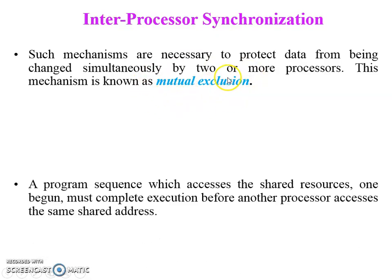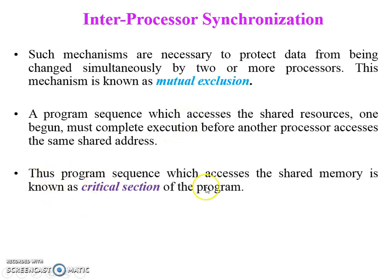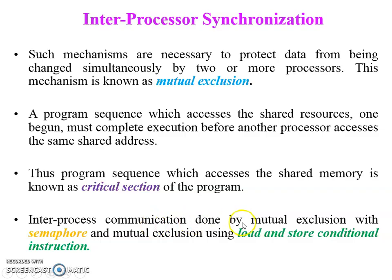Such mechanisms are necessary to protect data from being changed simultaneously by two or more processors; this mechanism is known as mutual exclusion. A program sequence which accesses shared resources — once begun — must complete execution before another process accesses the same shared variable. This program sequence which accesses shared memory is known as the critical section of the program. Mutual exclusion is implemented using semaphores and load-and-store conditional instructions to protect data from being changed simultaneously.